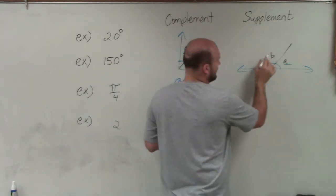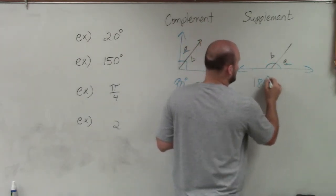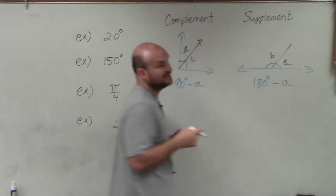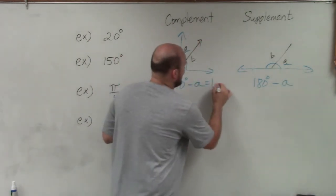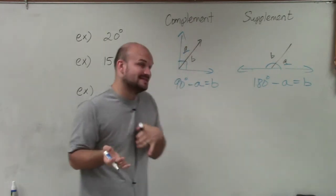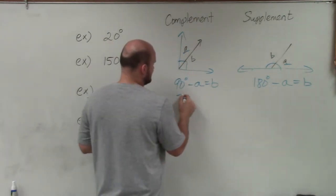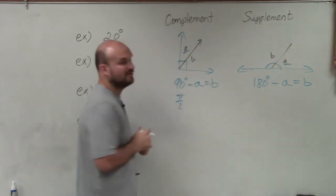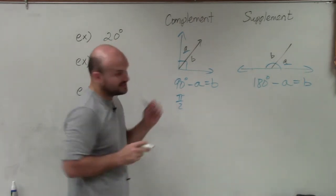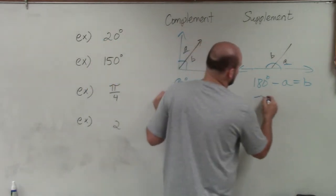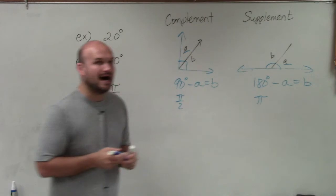If we're given a and we want to find b for the supplement, we're going to take 180 degrees and subtract a to find b. Now that is for degrees. If it's in radians, then we need to make sure that we use our equivalent form in radians. For 90 degrees that's π/2, and for 180 degrees that is going to be π.